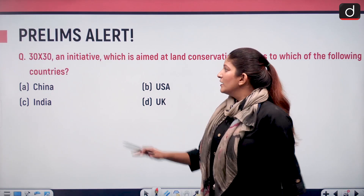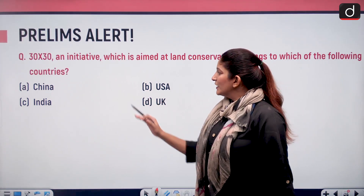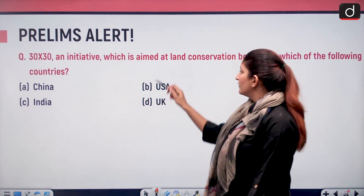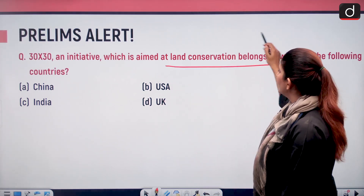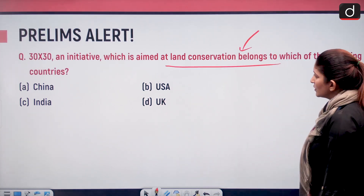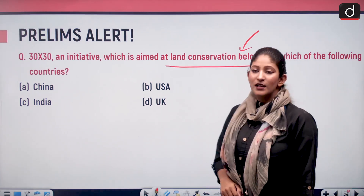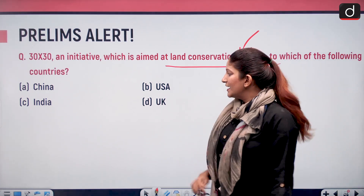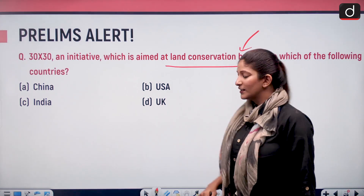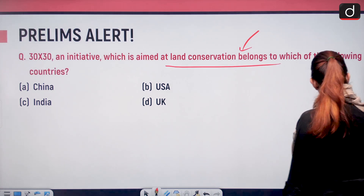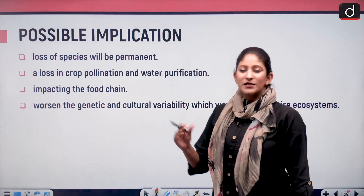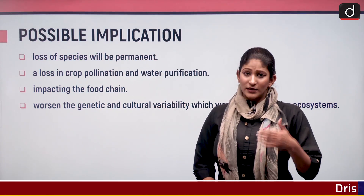Now for prelims, here is a question you should be able to answer with the help of this segment: the 30x30 initiative, aimed at land conservation, belongs to which of the following countries — China, USA, India, or UK? Answer it correctly in the comments as fast as possible.